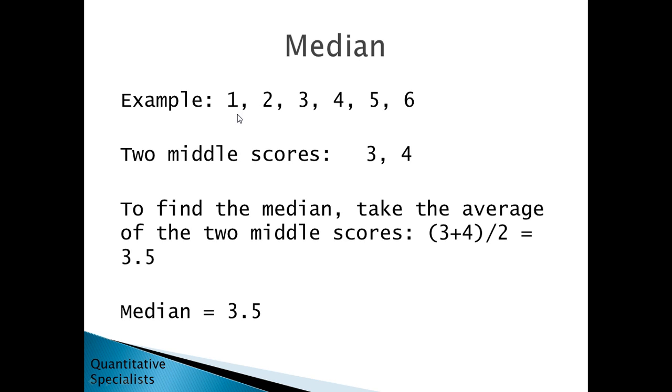As a second example, suppose we have the values 1, 2, 3, 4, 5, 6. To find the middle value here, if you count inward you should see there's two values in the middle: a 3 and a 4. When there are two middle values we want to find the average of those two middle values. So here we would take 3 plus 4, divide that by 2, and that gives us 3.5. In this case the median is equal to 3.5.